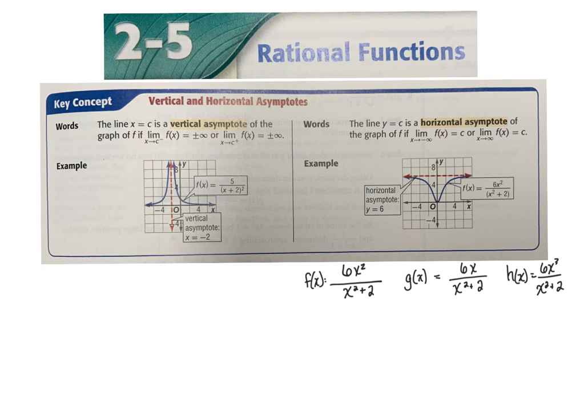The example given is 5 over (x plus 2) quantity squared. What's going to cause a problem in this graph? A problem happens when x equals negative 2, because that creates a 0 in the denominator. Can we get rid of the problem by factoring? No, we cannot. So that tells me I have a vertical asymptote here.